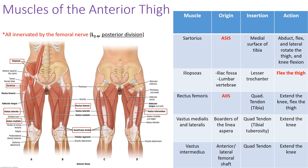Starting with the sartorius: this muscle comes from the ASIS — the anterior superior iliac spine — and runs diagonally down toward the medial aspect of the knee, inserting into the medial aspect of the tibia at a structure called the pes anserine. The action of this muscle is to abduct, flex the hip, and laterally rotate at the thigh — the overall motion resembling a hacky sack kick.